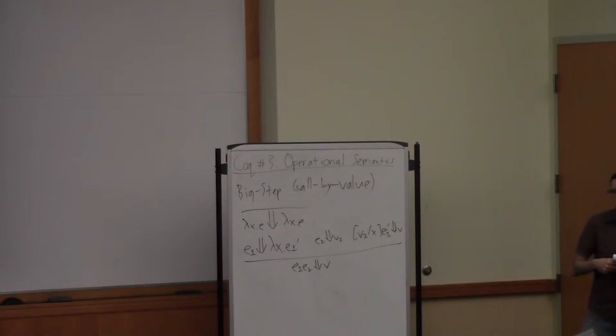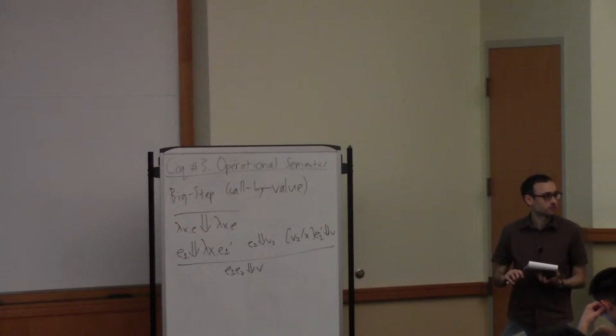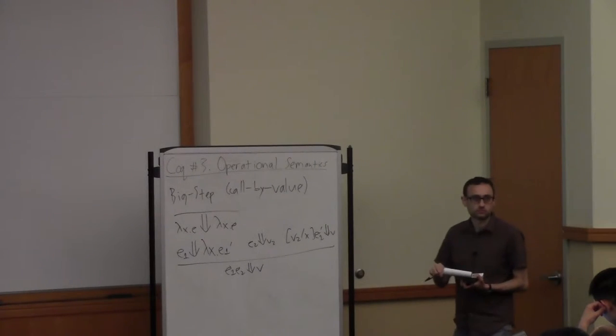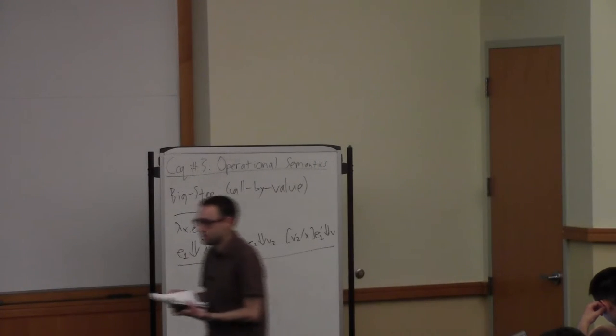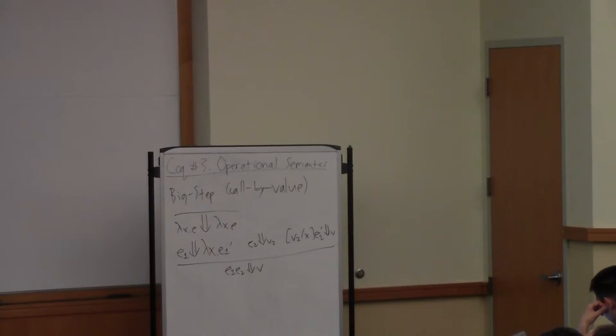Student asks a question. No, E1 could require further evaluation to get to be a lambda abstraction. For instance, it could be that identity applied to itself over there.